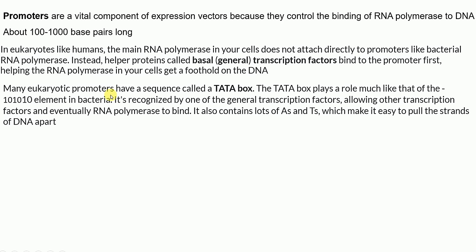Basically in eukaryotes, promoters have a specific sequence called a TATA Box, and this plays a major role similar to the -10 element in bacteria. This TATA Box is recognized by the General Transcription Factors. It allows other transcription factors and eventually RNA polymerase to bind. It also contains lots of A's and T's which makes it easy to pull apart the strands of DNA.